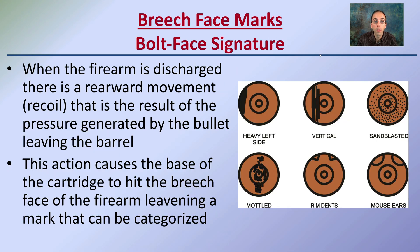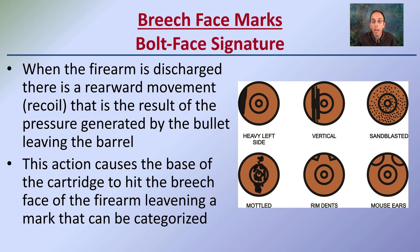Breech face marks are a bolt-face signature left when the base of the casing makes contact after the explosion occurs. When the firearm discharges, the rearward movement or recoil results from pressure generated as the bullet exits the barrel. There are distinctive patterns left by this action — the base of the cartridge hits the breech of the firearm, leaving a mark that can be categorized and used to match the potential firearm to the casing.